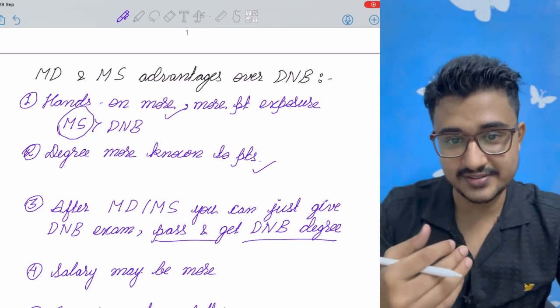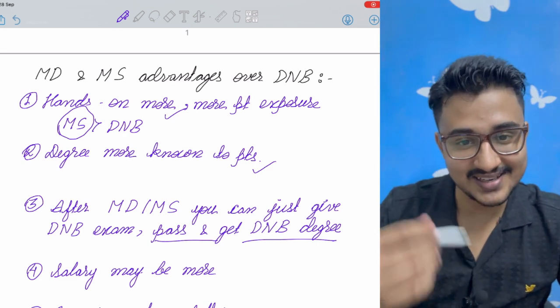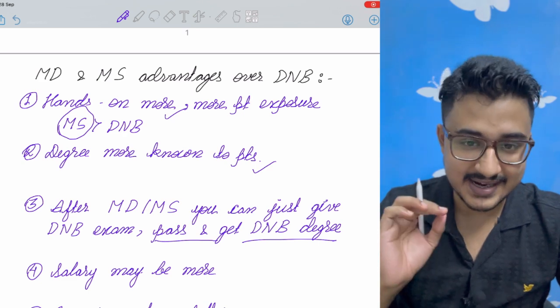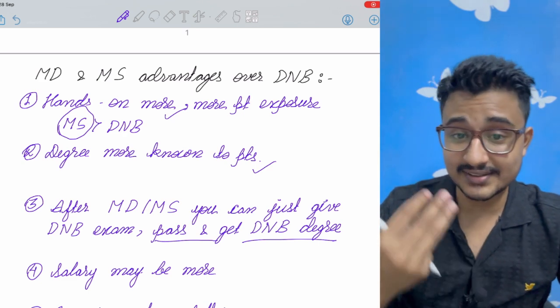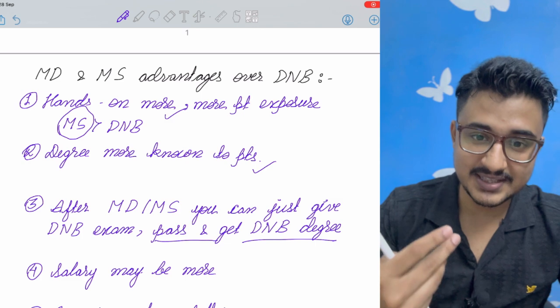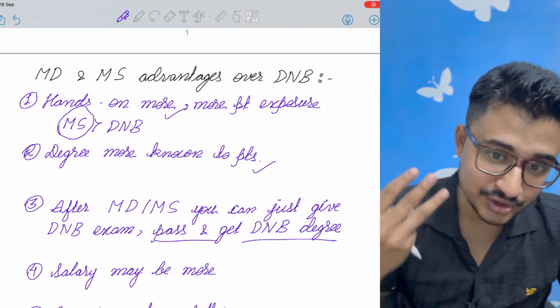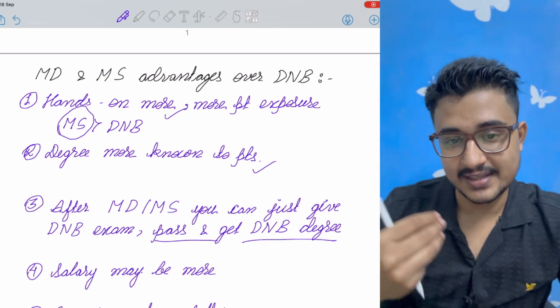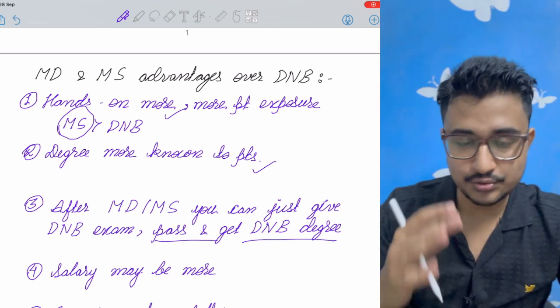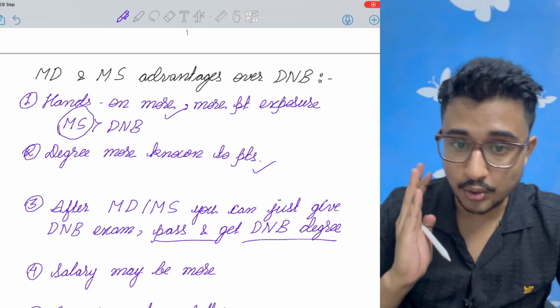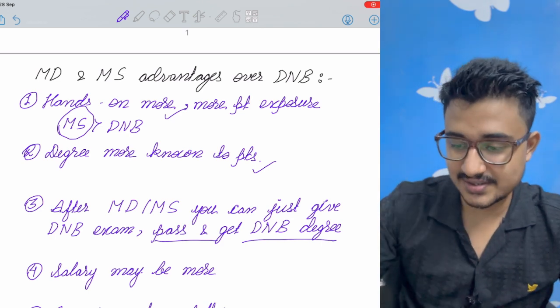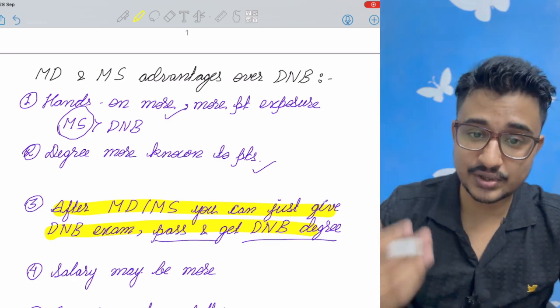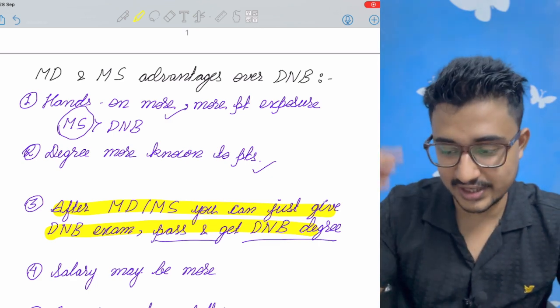But this is not vice versa. If you have done DNB and MD-MS exam then you will get MD-MS degree. This is not. If you do MD-MS and DNB pass then you get the three degrees. Three degrees means the MBBS degree, MD-MS degree and also the DNB degree. But if you are doing from DNB then you get the MBBS degree and DNB degree you can't do the MD-MS without doing the course. So this is I think the biggest advantage of MD and MS than DNB. That you can simply apply for the exam and if you pass you get the degree.